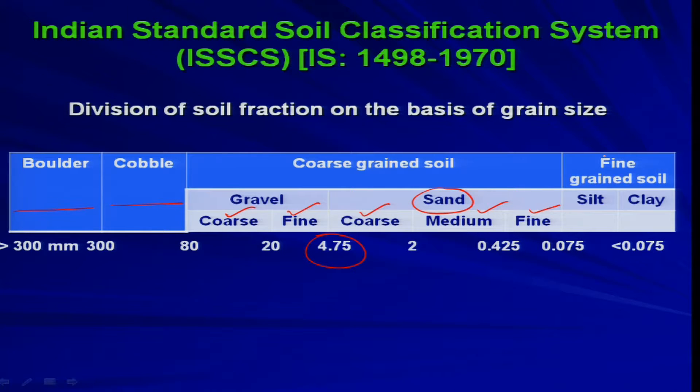Fine-grained soils — silt and clay — are particles below 0.075 mm. So the major categories are: boulder, cobble, coarse-grained soil (gravel and sand), and fine-grained soil (silt and clay). We have seen the preliminary aspects of the Indian Soil Classification System, including what is coarse-grained and what is fine-grained. In the next lecture, we will talk more about the soil classification system and how to proceed to get the actual classification and grouping of soil. Thank you very much.